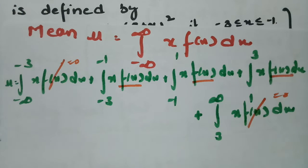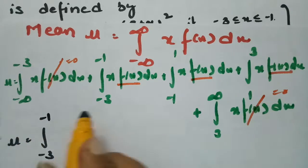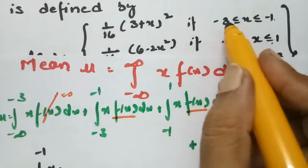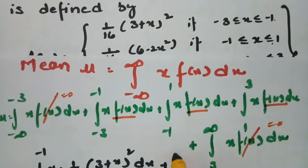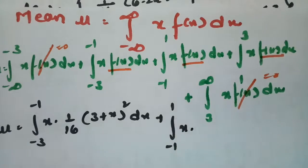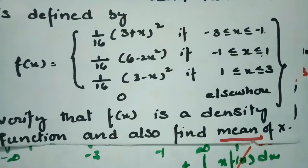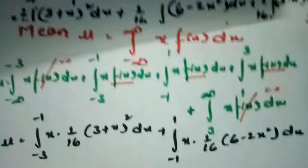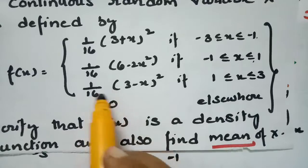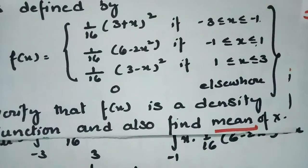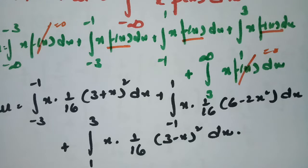Substituting f(x) values: μ = integral from -3 to -1 of x·(1/16)(3 + x)² dx, plus integral from -1 to 1 of x·(1/16)(6 - 2x²) dx, plus integral from 1 to 3 of x·(1/16)(3 - x)² dx.